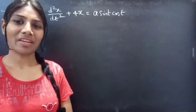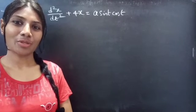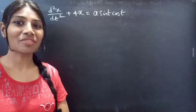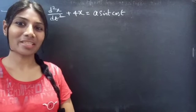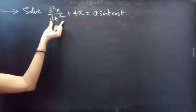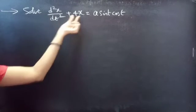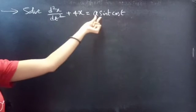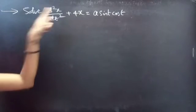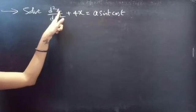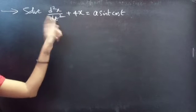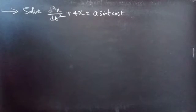Hello everyone, this is Jay Kalpana. In this video we are going to solve a differential equation from higher order linear differential equations. The problem: solve d²x/dt² + 4x = a·sin(t)cos(t). Here x is the dependent variable and t is the independent variable.